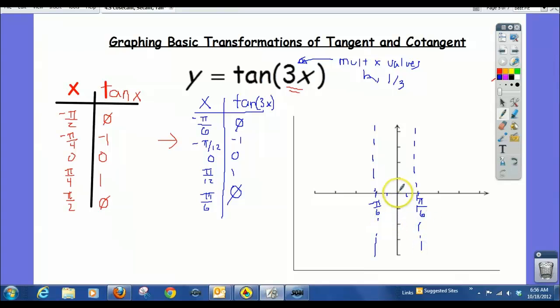And now we're going to graph 0, 0, negative π/12, negative 1, and π/12, 1. And there is one period. There is one period of the tangent graph, of this tangent transformation. Okay?